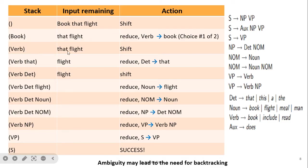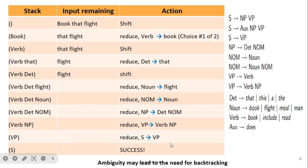After replacing 'book' with Verb, the remaining input is 'that flight'. We shift 'that' onto the stack — 'that' is a Determiner, so Determiner → that. Stack now has Verb and Determiner, remaining input is 'flight'. We shift 'flight' — it is a Noun, so Noun → flight. Then Nominal → Noun. Now we have Verb, Determiner, Nominal. Determiner and Nominal together match the NP rule, so we reduce: NP → Determiner Nominal. Then Verb NP matches the VP rule, so VP → Verb NP. Finally, S → VP, so VP is replaced by S — the statement is accepted.